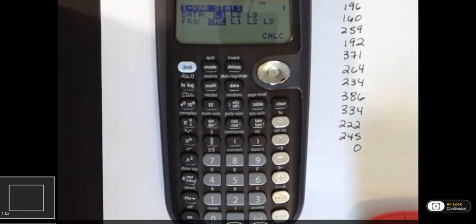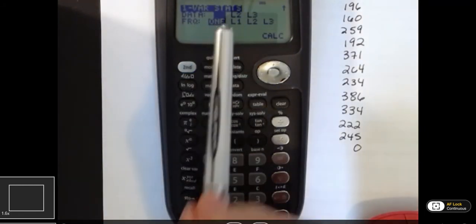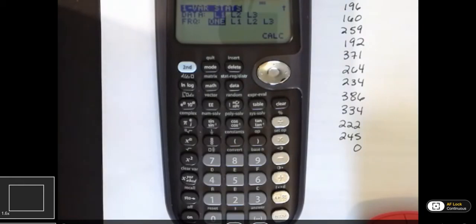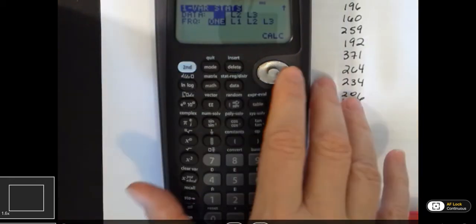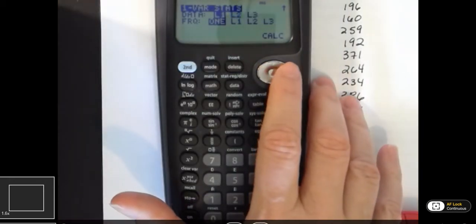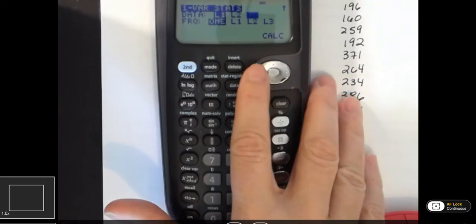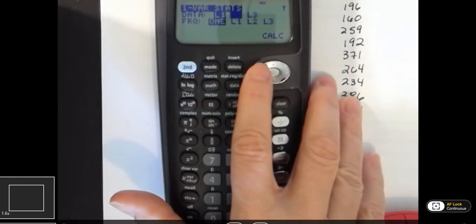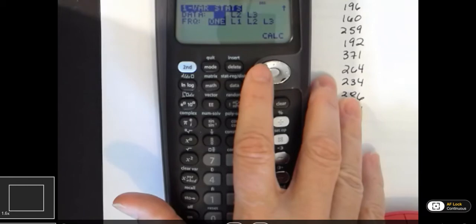Now what happens is it's going to flash and it's showing me L1. And what that means is that your data is in L1, at least we assume it is. And so I did put my data in L1, so that's where I want it. If I had put it in L2, I could scroll over and say use L1 or L2 or L3. But by default, it's going to go into L1 and that's what I want.